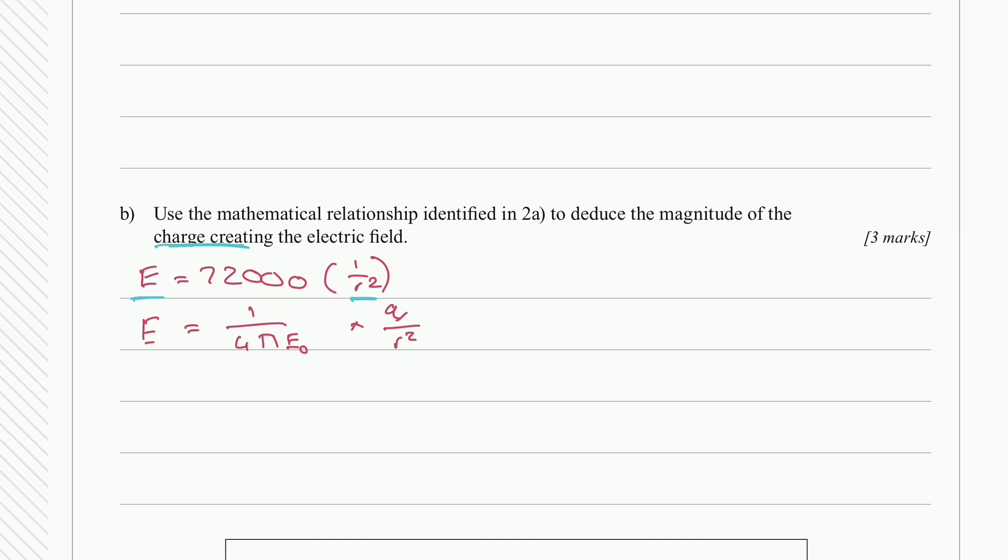Now the reason I put the multiply here is to show you that this here is a constant. So this is Coulomb's constant. And what I would do for this is let 1 over 4 pi epsilon naught equal k_e for Coulomb's constant. So I would rewrite the formula here as E is equal to k_e multiplied by q over r squared.